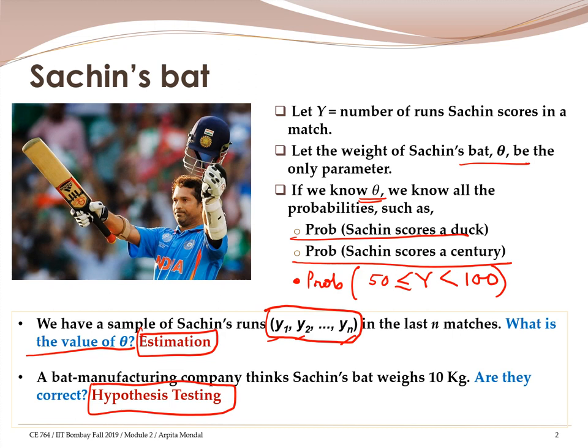The other problem — the problem of hypothesis testing — is to test several hypotheses on the parameter. Here we will restrict our discussion to hypothesis testing on the parameters. For example, in this simple case, a bat manufacturing company thinks that a certain bat's weight is 10 kg. Whether that hypothesis is correct is a problem of hypothesis testing.